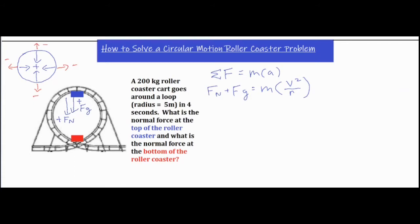Summing up the forces from our diagram: Fn pointed downwards would normally be negative in many cases, but in a circular motion problem, because it's pointing towards the center of the circle, it is a centripetal radial inward force and therefore positive. So we have Fn plus Fg equals m times v squared over r, which is the centripetal acceleration substituted in for a.